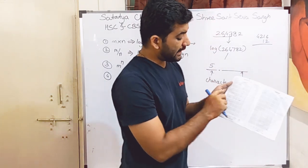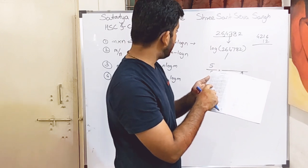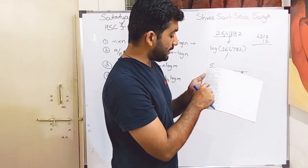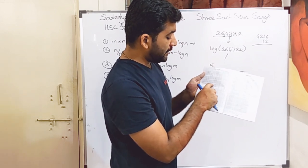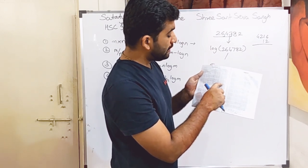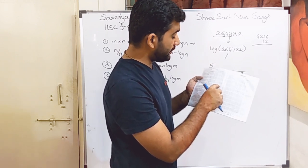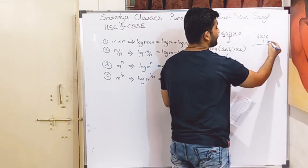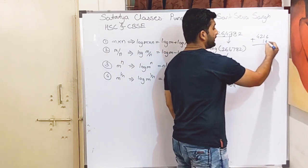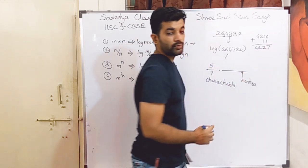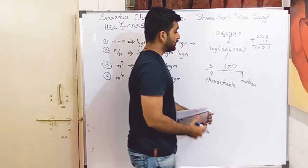So what I have done is: I found the value of 26 in the fourth column, which is 4216. Then in the mean difference for 7, I got 12. Adding these two numbers gives 4228. So we write 4228 as our mantissa part. The log value of this number is therefore 5.4228.